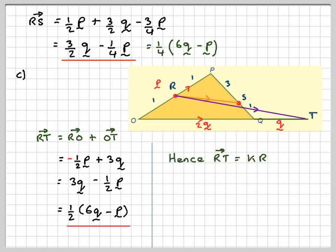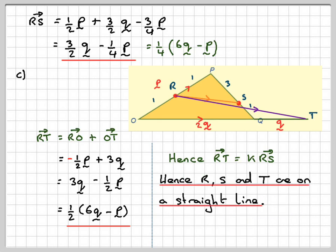And then hence, RT is equal to some multiple of RS. And therefore, hence, R, S, and T are on a straight line. Because the point R is common in both vectors.